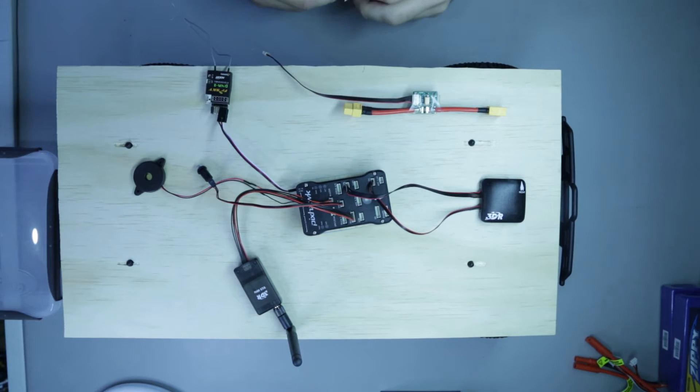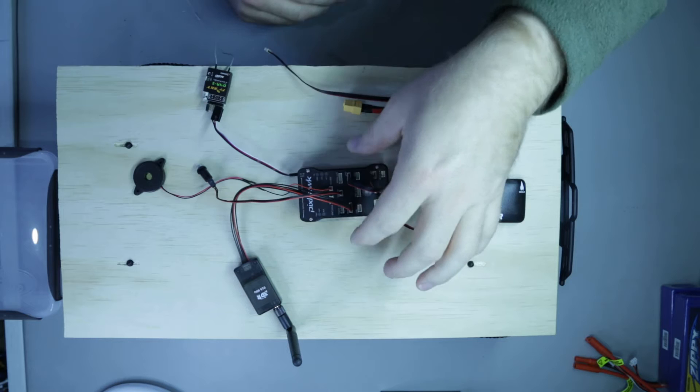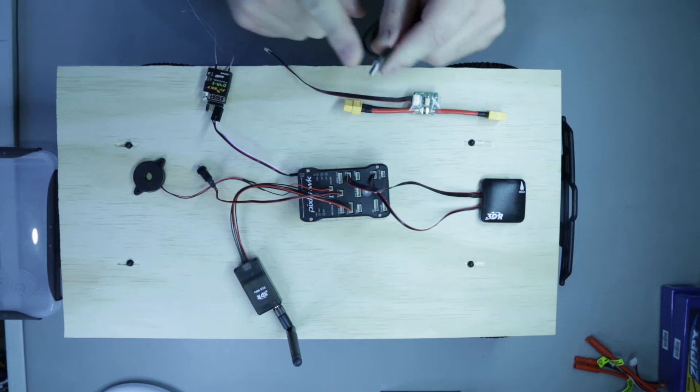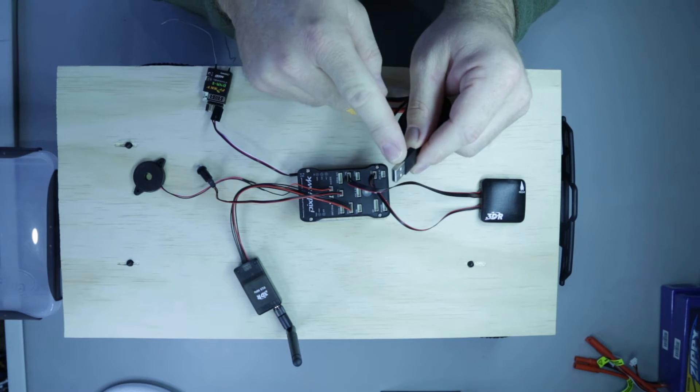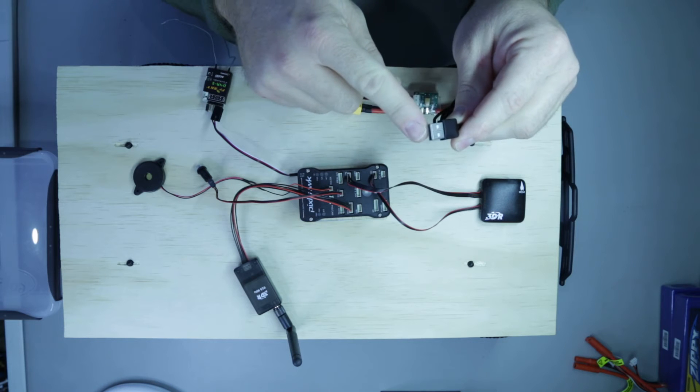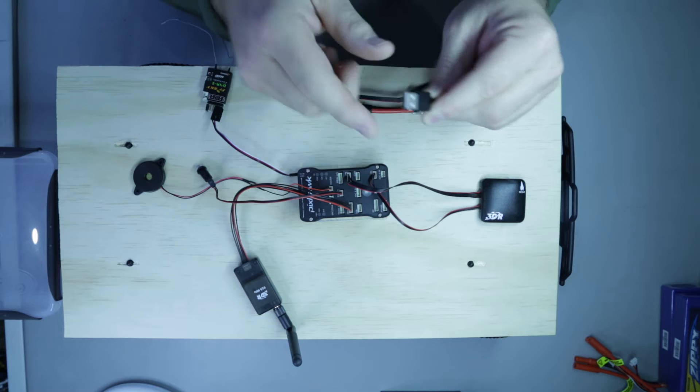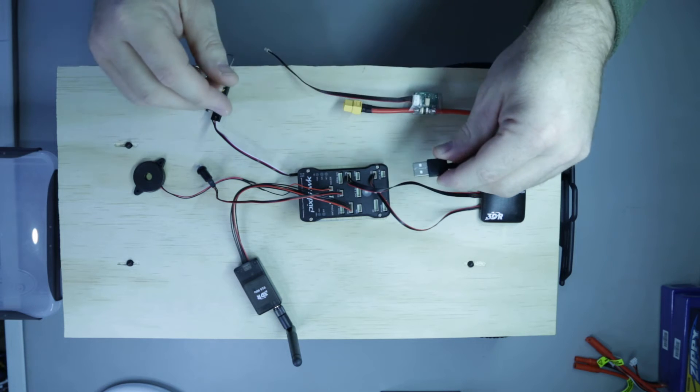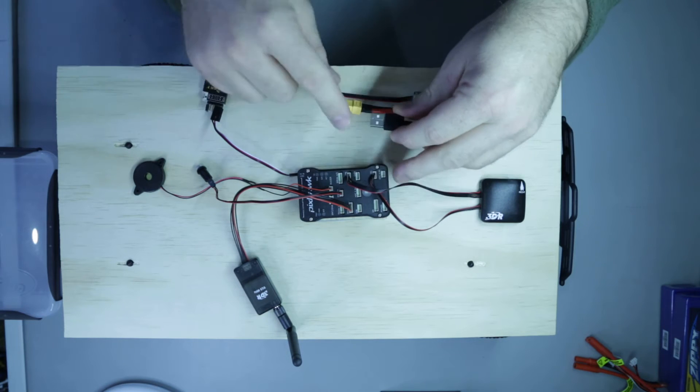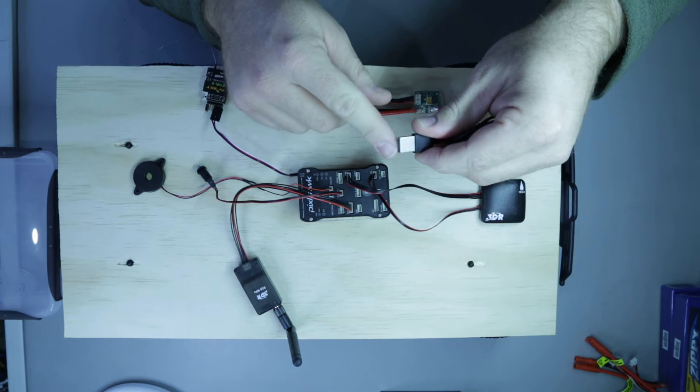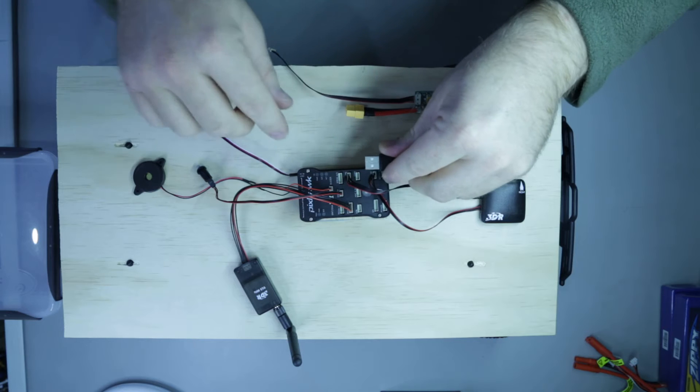I'll show you a trick for removing the DF13 from the Pixhawk. If you've plugged the DF13 in and you don't want it in that port, get yourself a USB cable with the flat end. Coming in from this side of the connector where you've got your arrow on the Pixhawk, you get that flat piece under the whole of the DF13 connector like this.